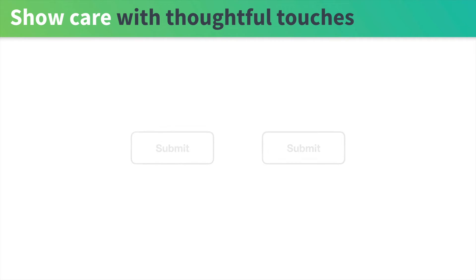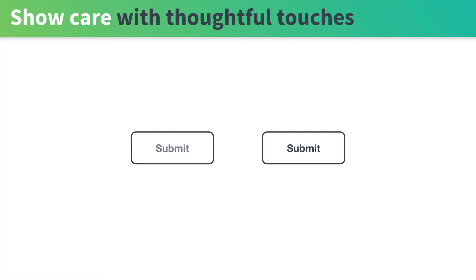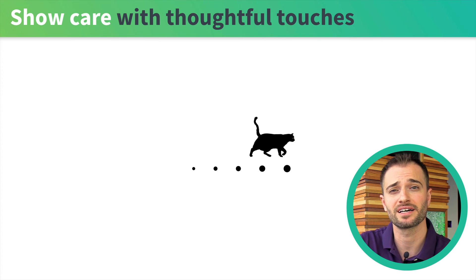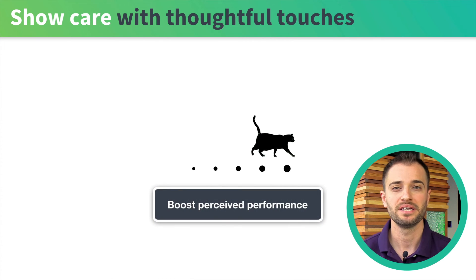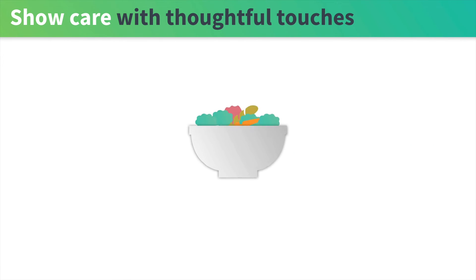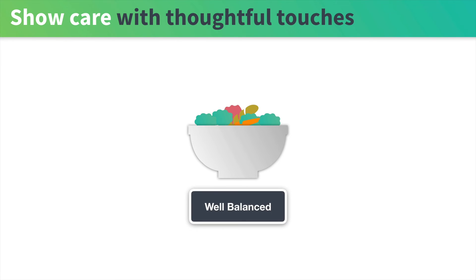We can show the user that we care with thoughtful touches. Instead of a user clicking a button and just waiting around wondering if it worked, we can give them direct feedback in real time — displaying a loading indicator and showing that the action happened successfully, or that it didn't happen successfully. Another example might be crafting a custom loading indicator. Studies show that custom loading indicators actually boost perceived performance, meaning the user is willing to wait longer for things to load. But as a word of caution, just like any good meal, a well-animated interface needs to be well-balanced. Too few animations and we risk the app being dull and hard to navigate; too many and we risk ruining the user experience.